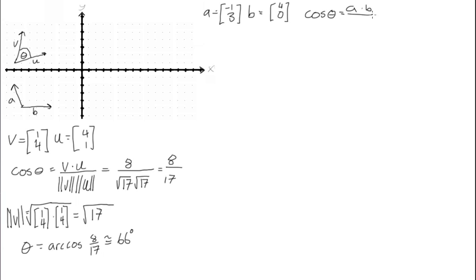Applying the formula, cosine of theta equals a dot b over the length of a times the length of b. Working through this: a dot b is negative 1 times 4, which is negative 4, plus 3 times 0, giving us negative 4.